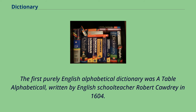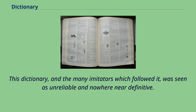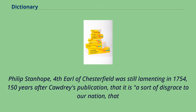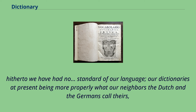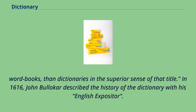The only surviving copy is found at the Bodleian Library in Oxford. This dictionary, and the many imitators which followed it, was seen as unreliable and nowhere near definitive. Philip Stanhope, 4th Earl of Chesterfield, was still lamenting in 1754 — 150 years after Cawdrey's publication — that it is a sort of disgrace to our nation that hitherto we have had no standard of our language, our dictionaries at present being more properly wordbooks than dictionaries in the superior sense of that title. In 1616, John Bullokar described the history of the dictionary with his English Expositor.